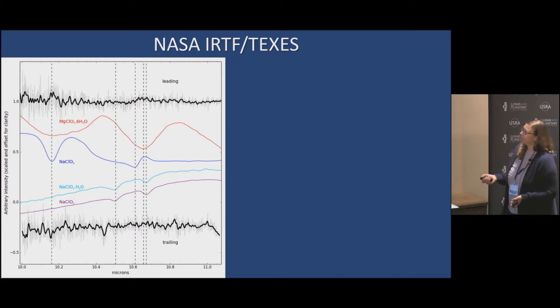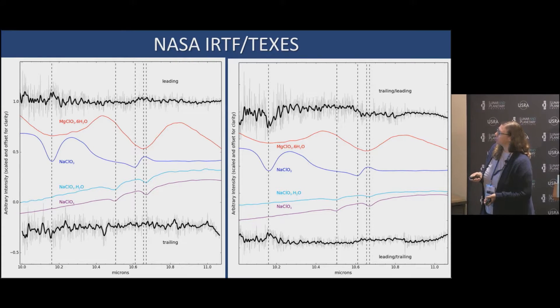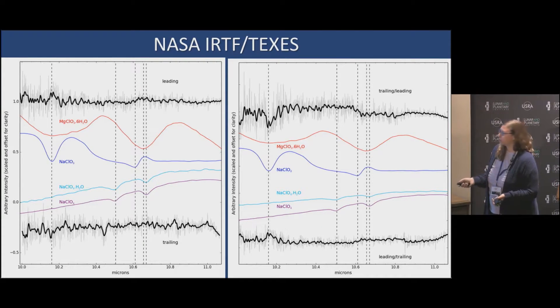We actually had some time on IRTF with TEXES, which is a high resolution spectrometer. Here you can see the leading hemisphere versus the trailing hemisphere. It's just a single disc integrated spectrum. If you ratio the two, so trailing divided by leading, to just kind of pull out the differences between the two hemispheres, there is something here for sure. There is a difference between the leading and the trailing. It does happen to line up with sodium chlorate. I don't know, more work to be done, but that's very interesting. You do again see some interesting shapes and features in this wavelength region. This is just from 10 to 11 microns, so we would like to extend the wavelength region.